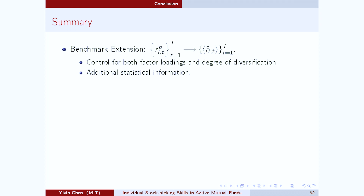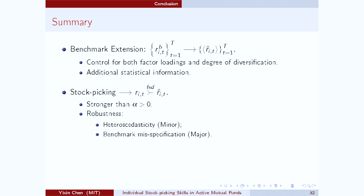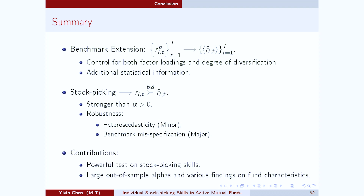To quickly summarize, there are two key ideas in this project. The first idea is to extend our benchmark from a time series of returns to a time series of return distributions, so that now we can control for both the factor loadings and the degree of diversification of the investor. The second idea is to impose first-order stochastic dominance, which is a very strong condition. Therefore, we can develop robustness against problems such as heteroscedasticity or benchmark misspecification. By applying this test to the active mutual fund industry, we're able to identify a group of managers who are very skilled at picking stocks, and various findings on their characteristics provide new insights to better understand the mutual fund industry.